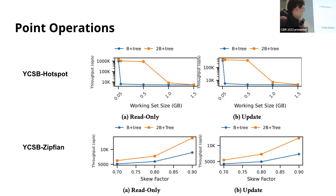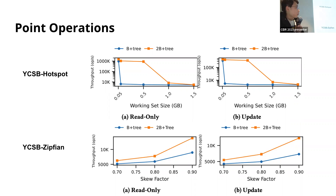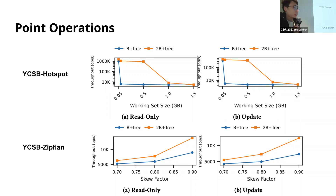For the YCSB Zipfian access distribution, which covers all data records in its working set, we are seeing up to 70% throughput improvements for both read and update workloads. Another way of looking at this figure is that you can have a smaller buffer pool with the two-tree design but deliver similar throughput compared to a single tree with a larger buffer pool. So it basically can improve the cost-performance of the system.